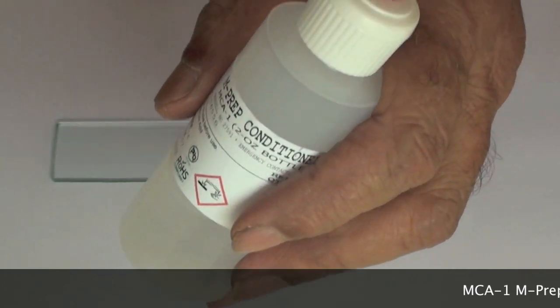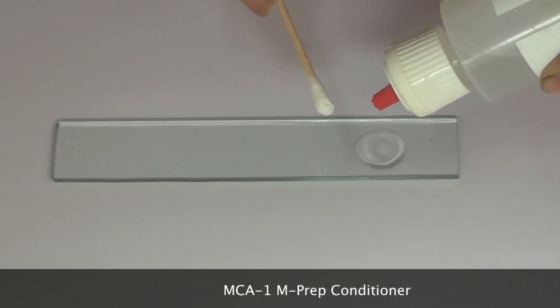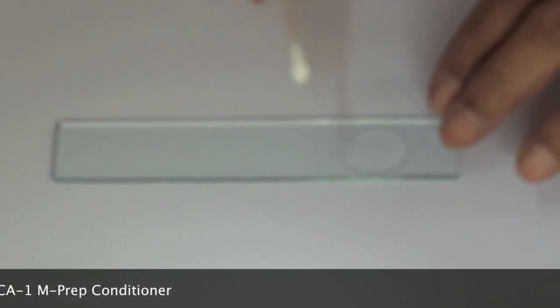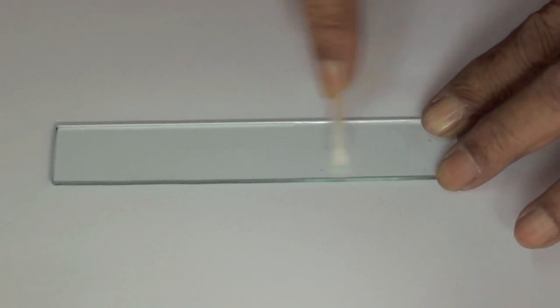A few drops of M-prep conditioner on the surface helps considerably as it is acidic and detects the contaminants and removes them. Scrubbing is done with a cotton tipped applicator.